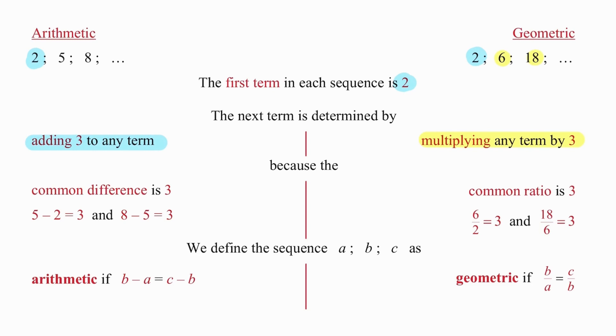The common difference in an arithmetic sequence is what causes this to be a linear pattern, and the common ratio in a geometric sequence is what alerts us to the fact that we are working with a geometric sequence.